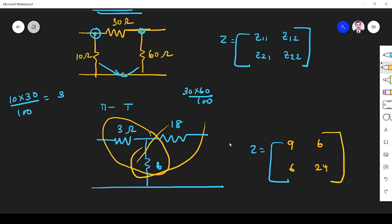In this way, you can solve the problem very easily. No need to write all the equations. Whenever they ask Z parameter questions with a pi network, convert it into an equivalent T network and find the answer like this. I hope you understand. Thank you.